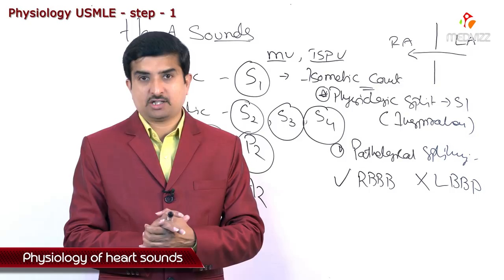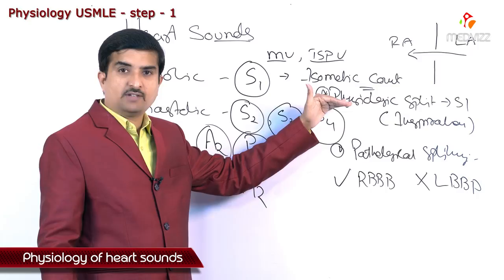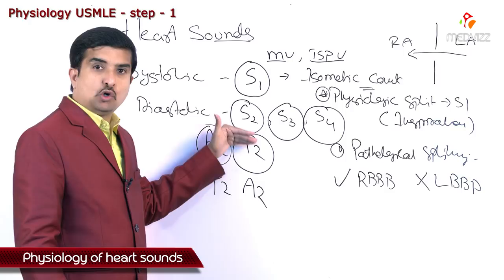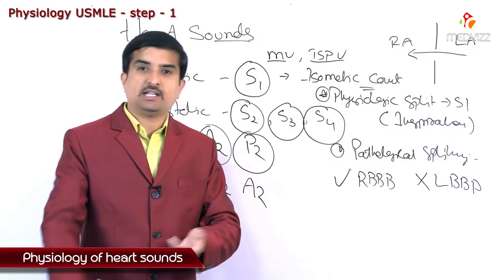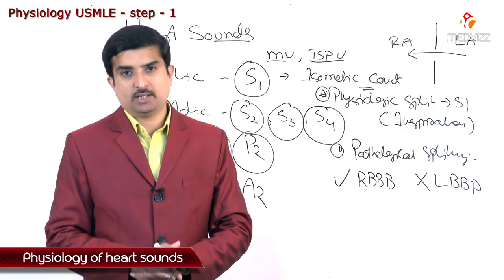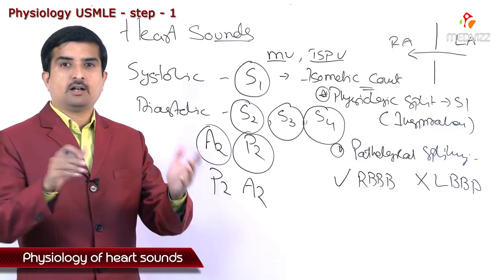To summarize: S1 is produced during the isovolumetric contraction period and is a systolic heart sound. S2 is produced during the protodiastolic period due to closure of the semilunar valves. S3 is a diastolic sound produced during the rapid filling phase of the cardiac cycle. S4 is produced during atrial systole.